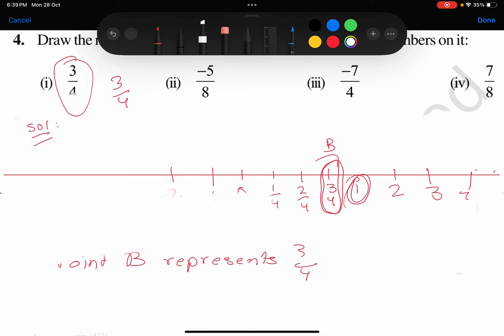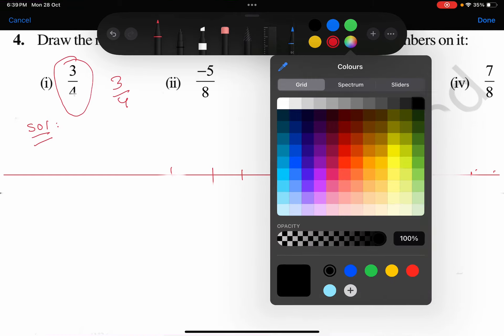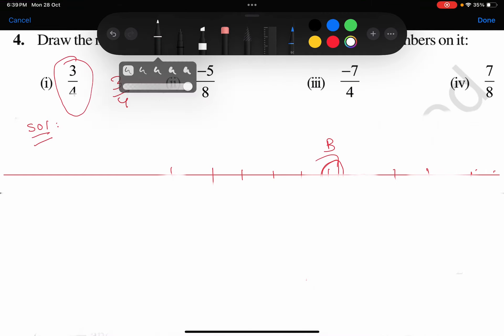The second one—I'll not erase the line because it will be easy for me to not draw again and again. The second one is minus 5 by 8.